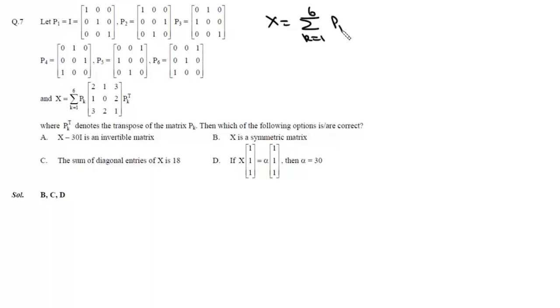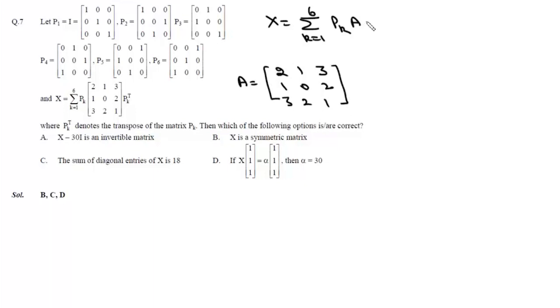We are given six matrices p1, p2, p3, p4, p5, and p6, where p1 is I (the identity matrix). We have defined matrix X as the sum where k varies from 1 to 6 of pk·A·pk transpose. Matrix A is taken as [2, 1, 3; 0, 1, 2; 3, 2, 1].